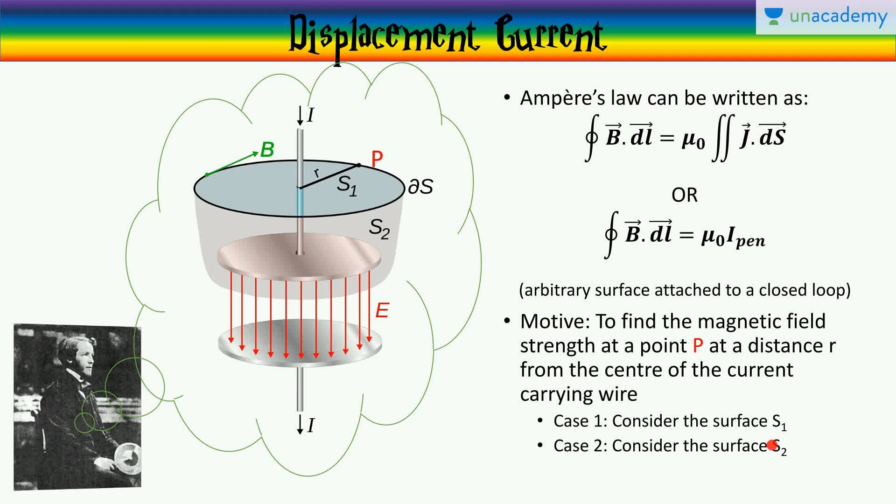The first case is we are going to consider the gray surface here, the S1 surface, as the open surface attached to the closed loop, which is shown by this black outline around here. And the second case, we are going to consider the surface S2, which is this light reddish surface, which is the second option, the surface that we will also consider in trying to measure the magnetic field at point P.